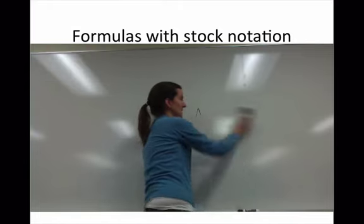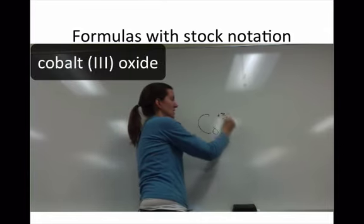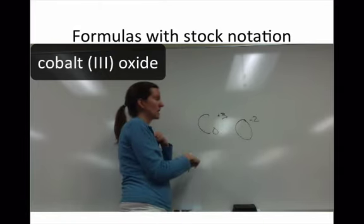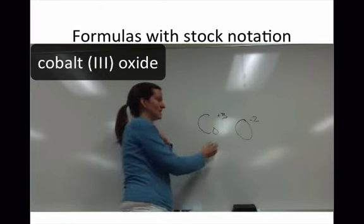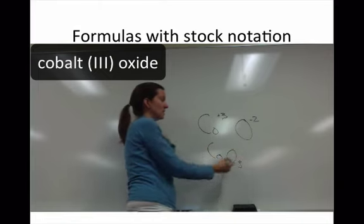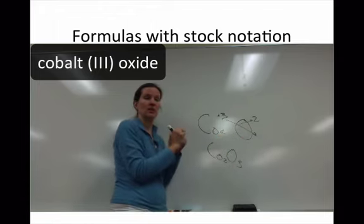And in the last example, I give you cobalt with a plus 3 and oxygen with a minus 2. The least common multiple here is 6. So you need 2 cobalts and 3 oxygens. Or you can consider the charges to help you out with that.